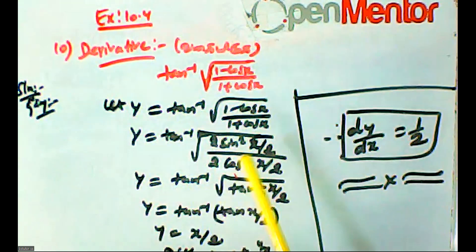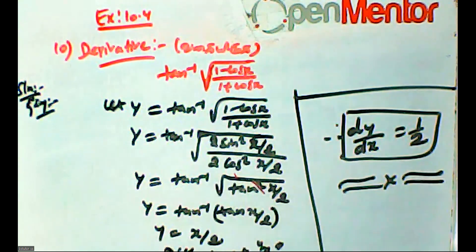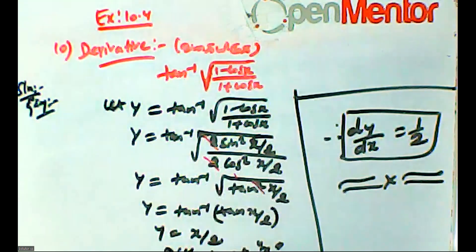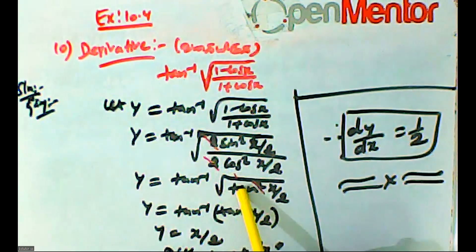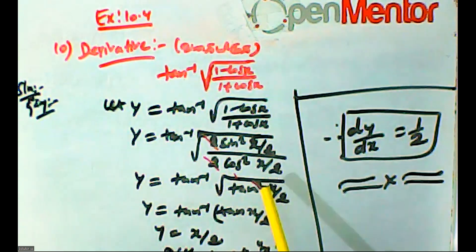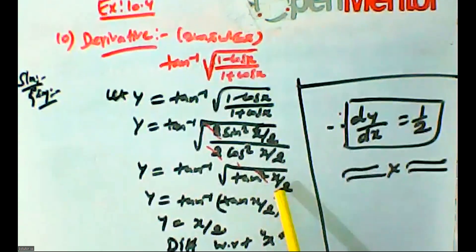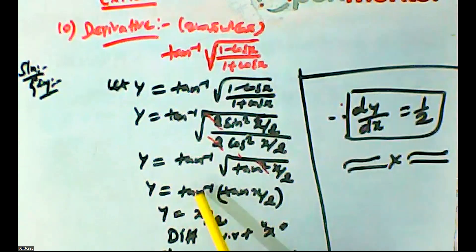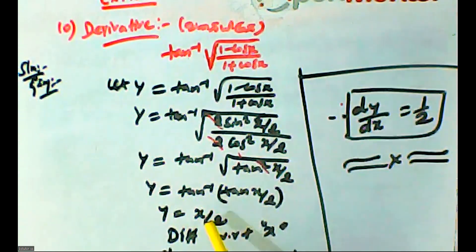So y equals tan inverse of the square root of sin squared (x/2) over cos squared (x/2). The 2's cancel. This is root of sin squared by cos squared, which gives sin by cos, which is tan. The square root of tan squared (x/2) gives tan(x/2). Therefore y equals tan inverse of tan(x/2), which simplifies to x by 2.